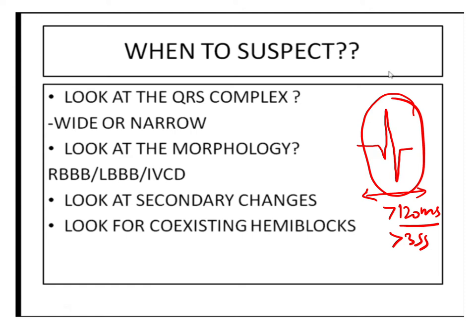After we get the QRS complexes, we have to look at their morphology — whether it is a right bundle branch block, left bundle branch block, or an intraventricular conduction defect. We also have to look at secondary changes and other coexisting findings.